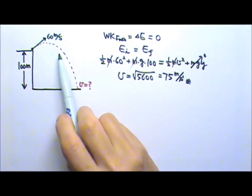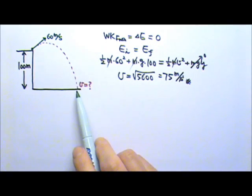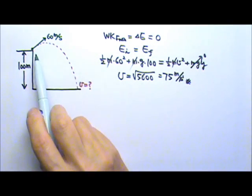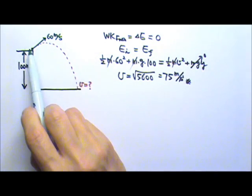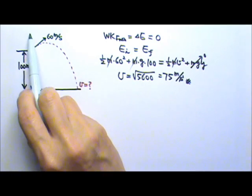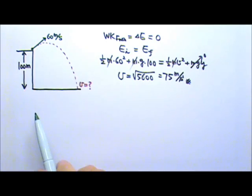Of course, we used to do projectile motion problems like this in kinematics. If we use kinematics to find the final speed, we would need to know the initial angle over here. So we can find the horizontal and the vertical components of the initial velocity.